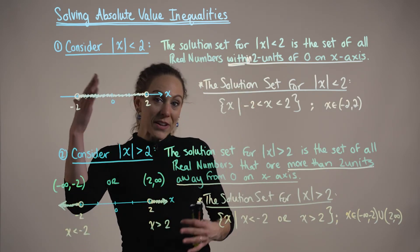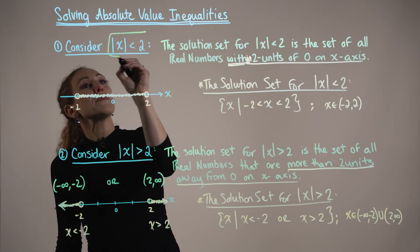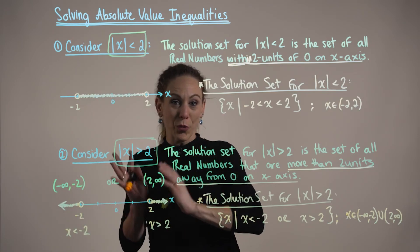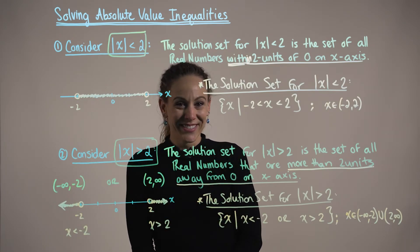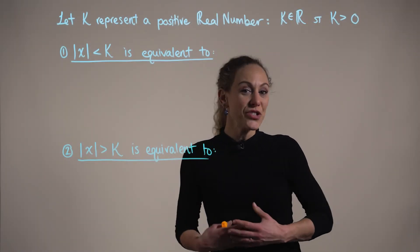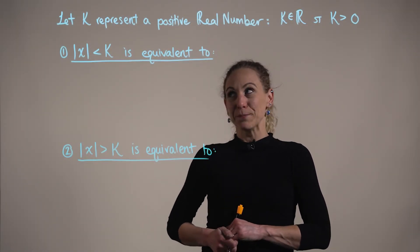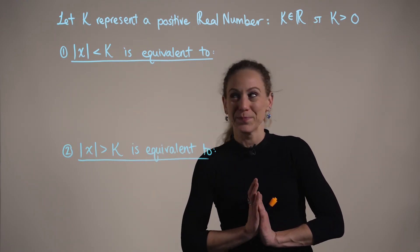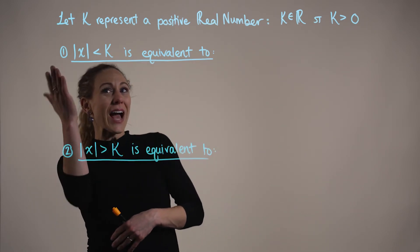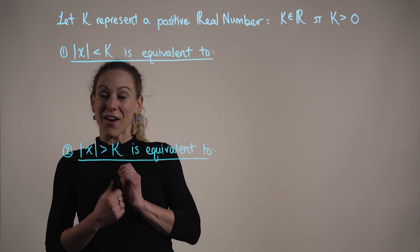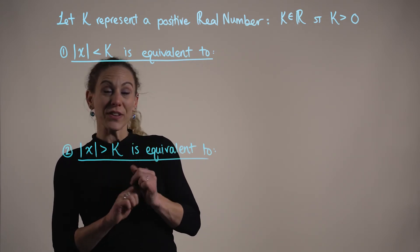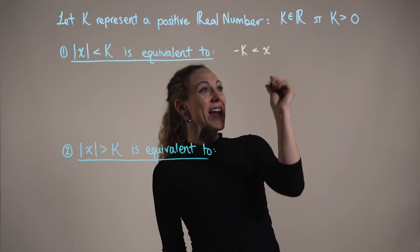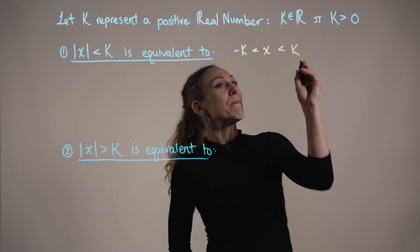Now that we've established some intuition for the different types of absolute value inequalities, let's put this into a more formal definition. To generalize our observations, let k represent some positive real number. As we just saw, the absolute value of x being strictly less than a positive constant k is equivalent to saying that x is going to be strictly greater than negative k and strictly less than positive k.